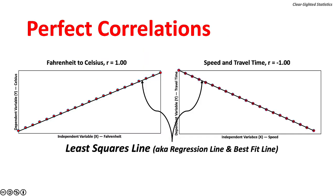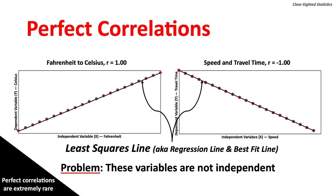With perfect correlations, all XY measures fall on the least squares or regression line. A perfect positive correlation exists between temperature measured on a Fahrenheit scale and temperature measured on a Celsius scale. A perfect negative or inverse correlation exists between speed and travel time. Perfect correlations are extremely rare, and the two examples shown violate a key assumption: the variables are not independent.